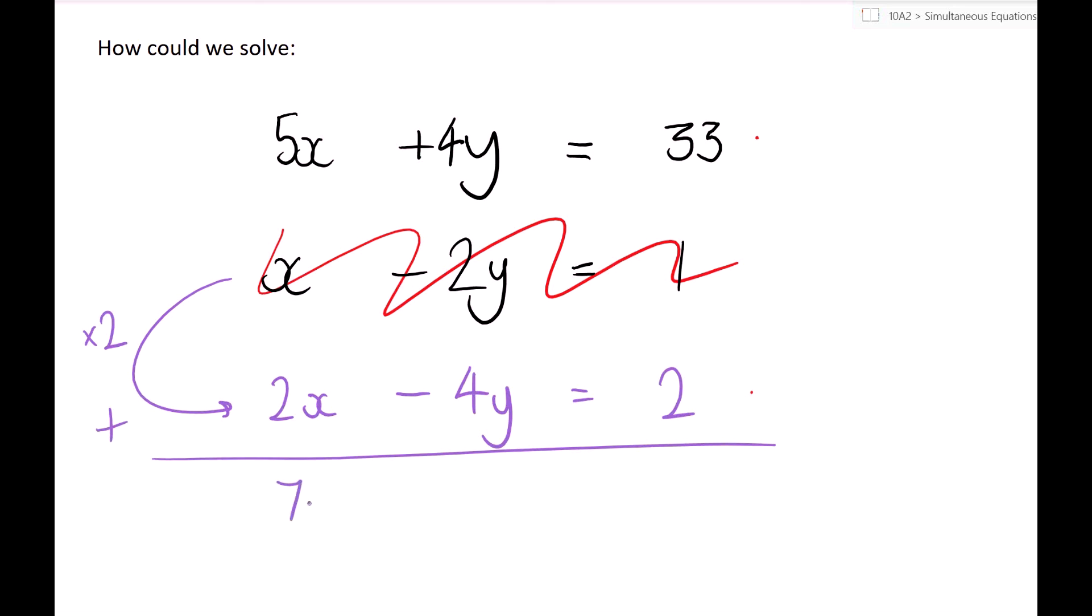So 5x plus 2x is 7x. 4y minus 4y is nothing, as it always is. 33 plus 2 is 35. Solving this, dividing 35 by 7 gives us 5. We know x equals 5, and again, I'm going to solve for y. Take any equation, it doesn't matter. So it's top equation. 5 lots of 5 is 25. So 25 plus 4y equals 33.